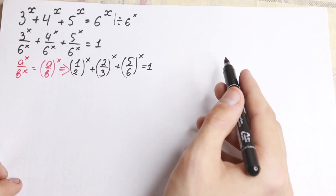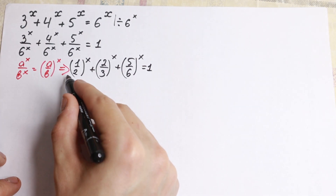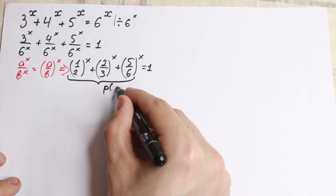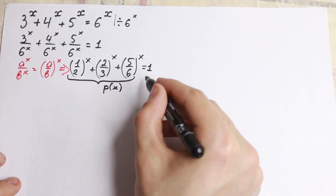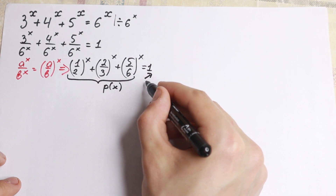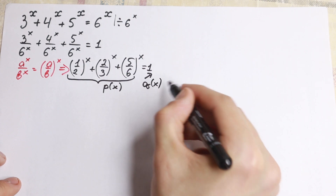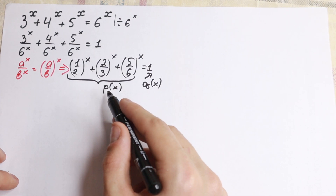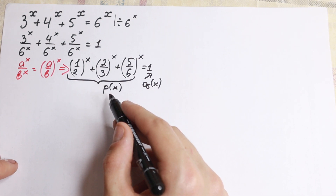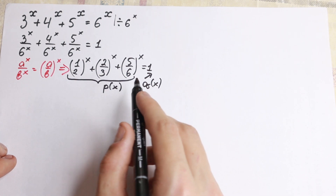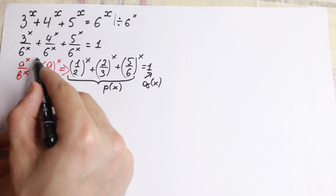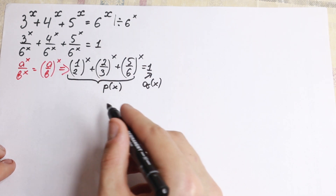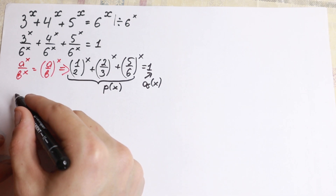Our function looks like that. Let's call this function p(x). And this constant on the right hand side will be q(x). So we will have two functions: q(x) on the right hand side and p(x) on the left hand side. This will be our f(x). Take a look — let's find the derivative of this function.